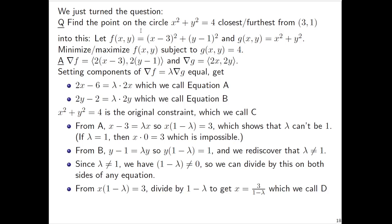Let's take x(1 - λ) = 3. Now that we know 1 - λ is not 0, let's divide by that on both sides and get x = 3/(1 - λ). We'll call that equation D.